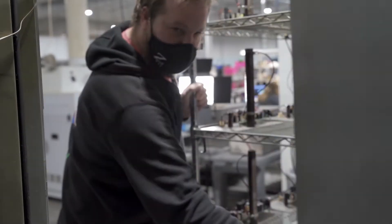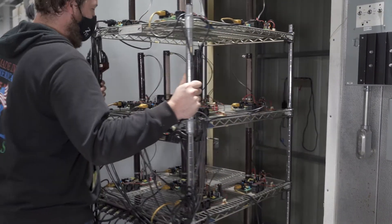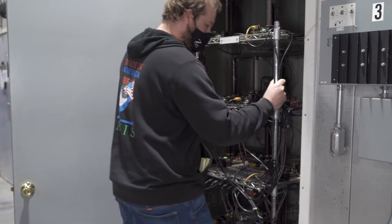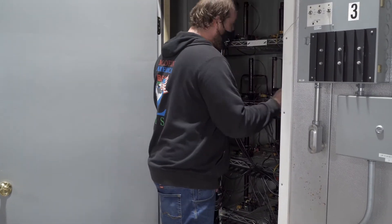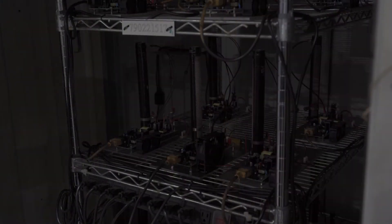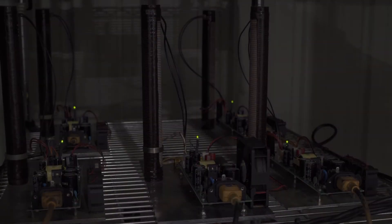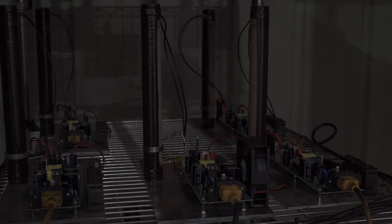The burn-in chamber condenses the normal early failure period from weeks or months down to a few days. The fixtures are plugged in and then the units powered up. Cycling the power on and off accelerates any component failures that will happen due to inrush current and thermal expansion stresses.